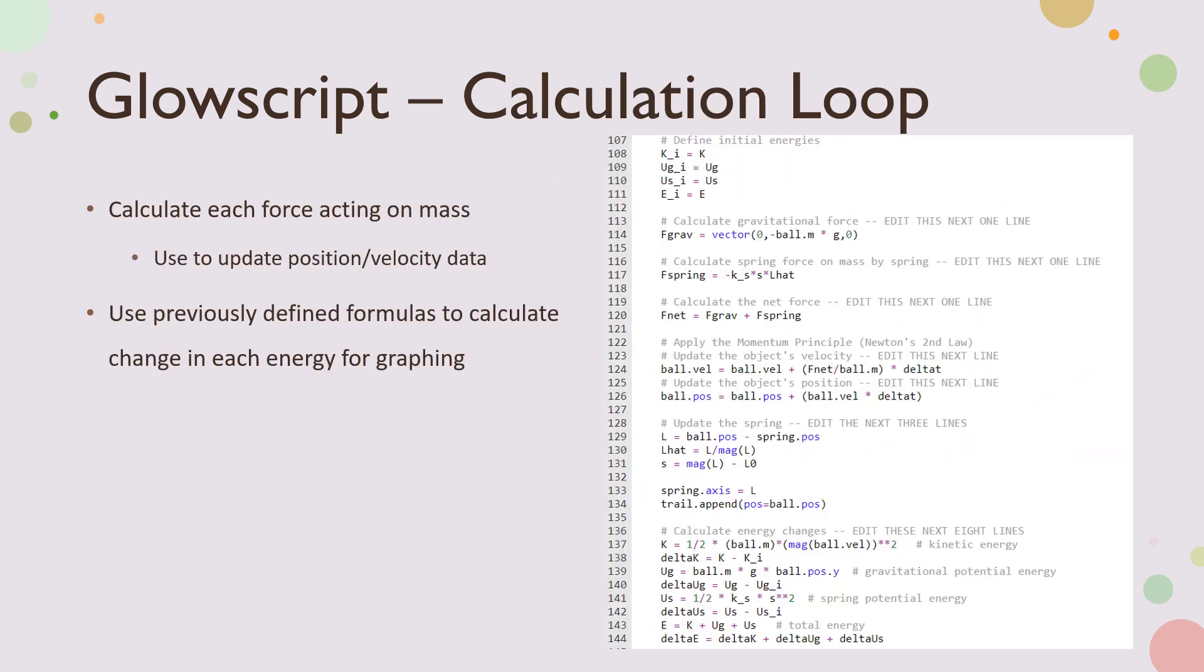For the calculation loop, I calculate each force acting on the mass, and this is used later to update the position and velocity data. You see spring force, F net, gravity, and then I use the previously defined formulas to calculate the change in energy for graphing. As you can see here, we are still setting up the spring length at each timestamp. And then these are all the changes in energies, change in kinetic, gravitational, spring potential, and total.